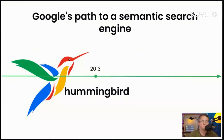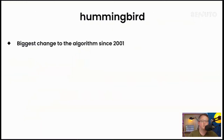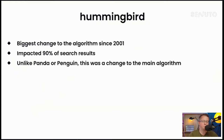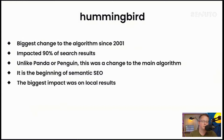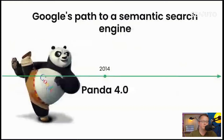The revolution came in 2013 when Google provided the Hummingbird update. As Google said, it was the biggest change to the algorithm since 2001 and impacted more than 90% of search results. Unlike Panda or Penguin, this was a change to the main algorithm itself, and it was the beginning of semantic SEO as we know it today. Hummingbird had the biggest impact on local results, and from that day Google started development of NLP models to better understand the intent of queries.